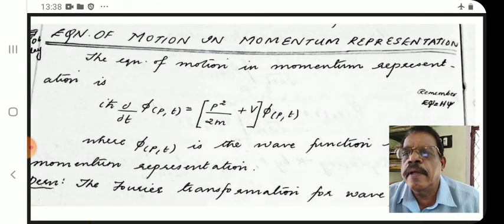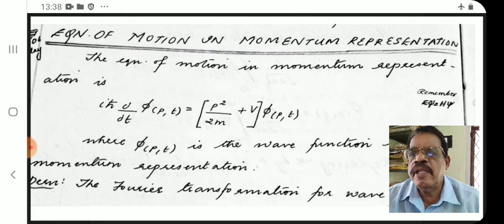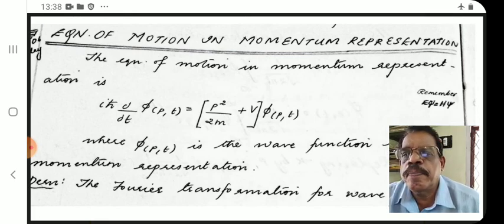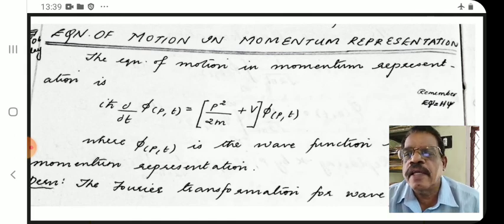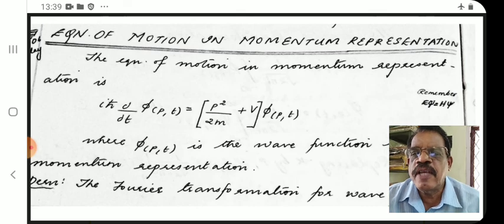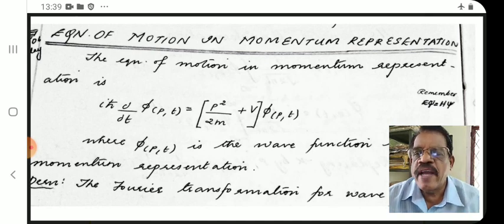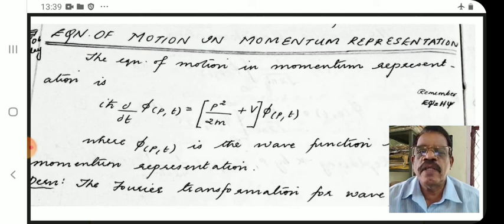The equation of motion in momentum representation is: i-h-bar (∂/∂t) φ(p,t) = [p²/2m + V] φ(p,t). This is similar to H-ψ = E-ψ, where on the right side we have H-ψ and on the left side E-ψ. Instead of ψ, the momentum representation of the wave function φ is used. So this is E-φ = H-φ, which is the Schrödinger equation, and this is the equation of motion in momentum representation.